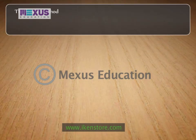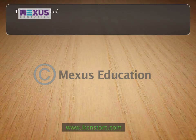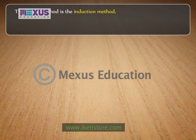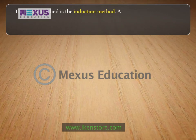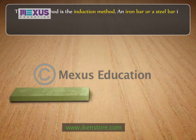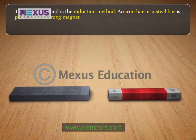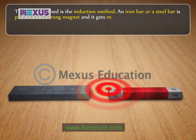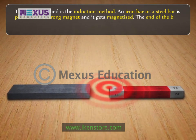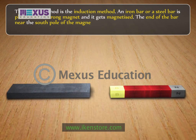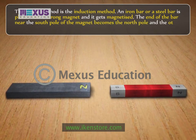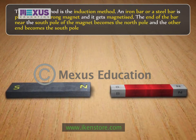The fourth method used to make artificial magnets is the induction method. An iron bar or steel bar is placed near a strong magnet and it gets magnetized. The end of the bar near the south pole of the magnet becomes a north pole, and the other end becomes a south pole.